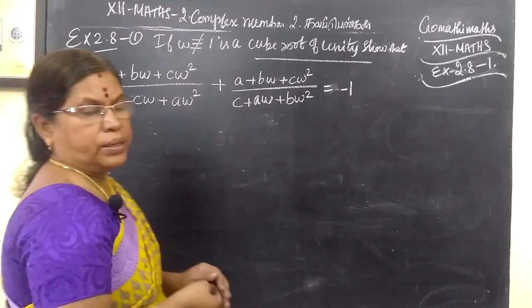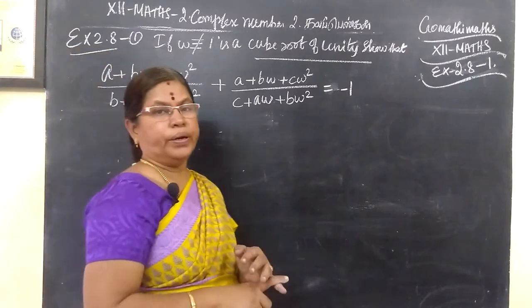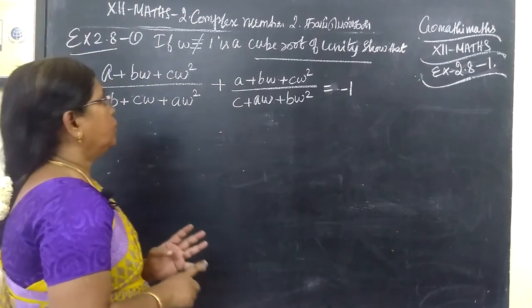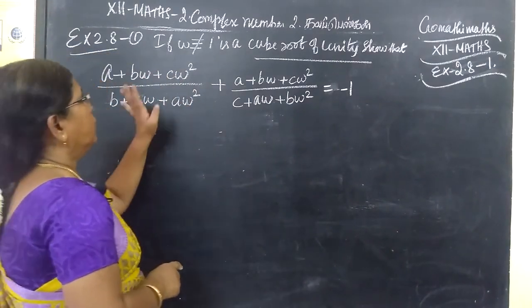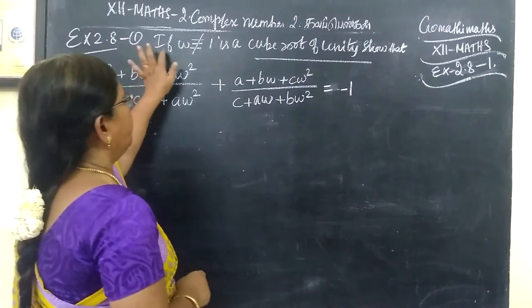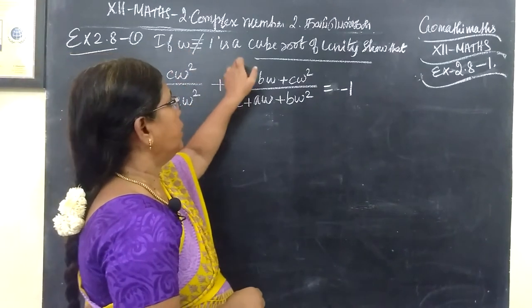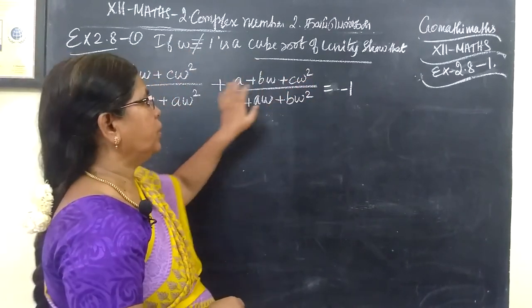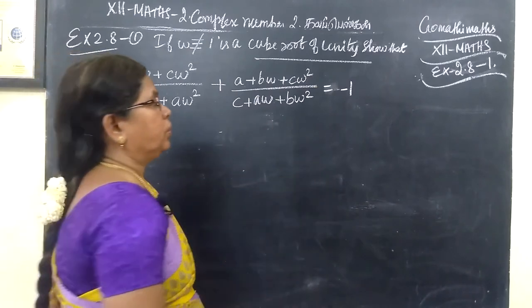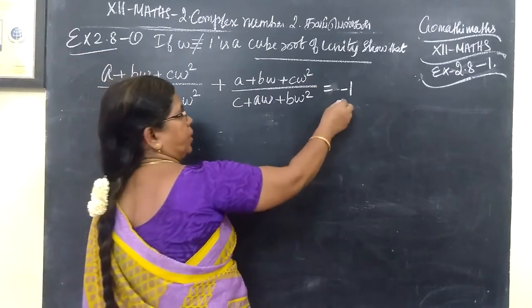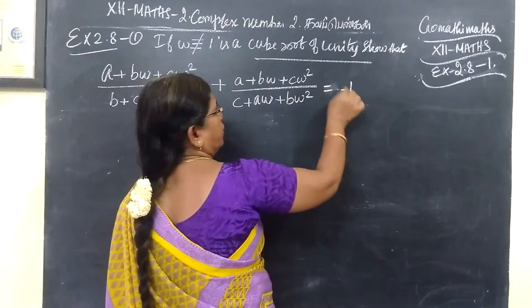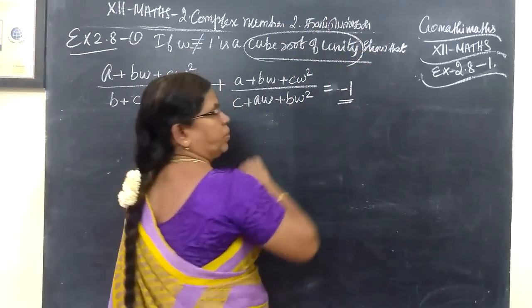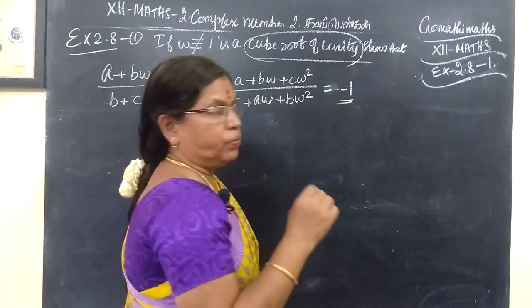Exercise 2.8, Question No. 1. You are given: if omega (ω) is not equal to 1 and is a cube root of unity, then this expression is equal to minus 1.